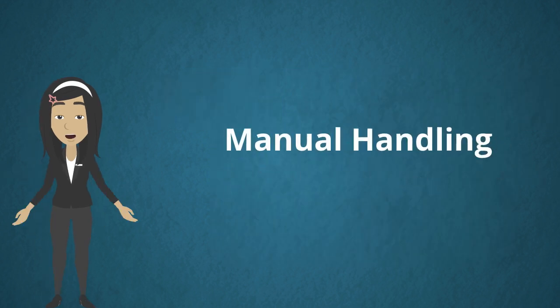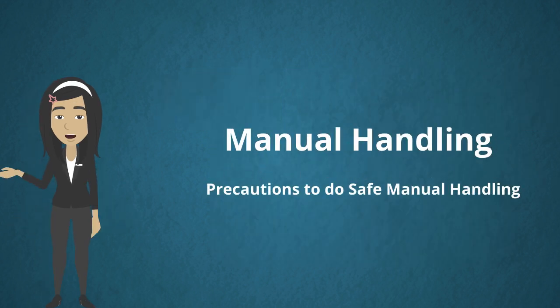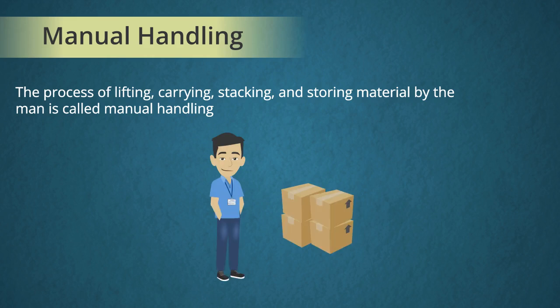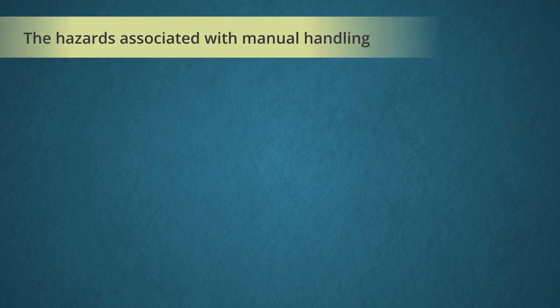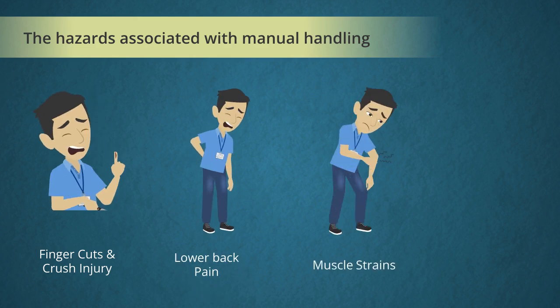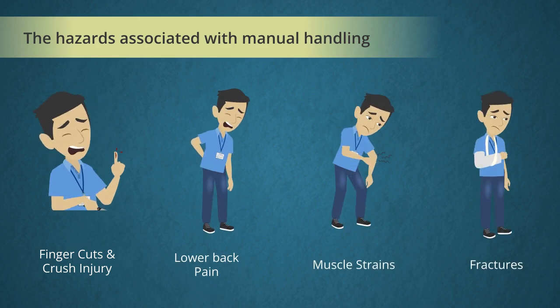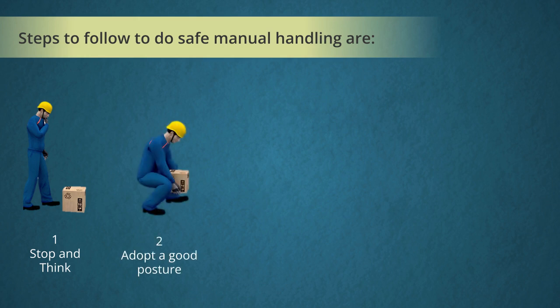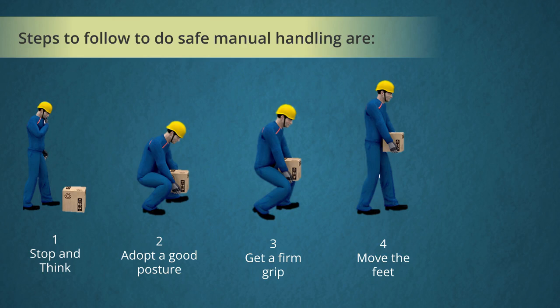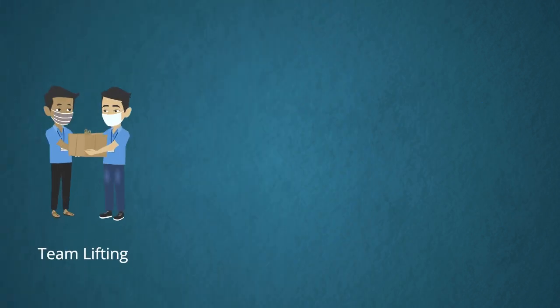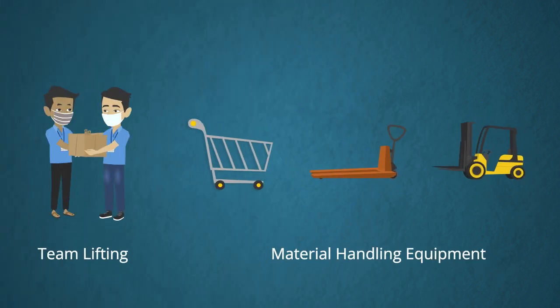Manual handling is the process of lifting, carrying, stacking, and storing material by a person. Hazards associated with manual handling include finger cuts and crush injury, lower back pain, muscle strains, and fractures. Steps to follow for safe manual handling: stop and think, adopt a good posture, get a firm grip, move the feet, and finally put down and adjust. When the load is more than 20 kg, do a team lift or use material handling equipment.